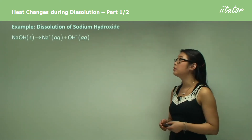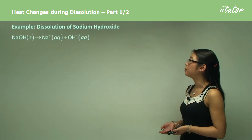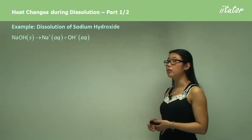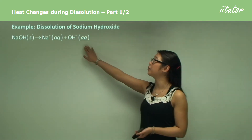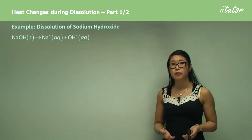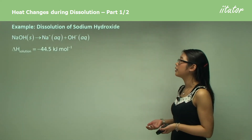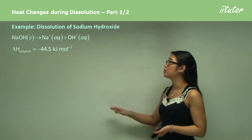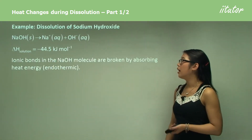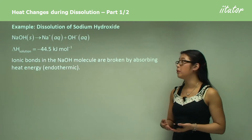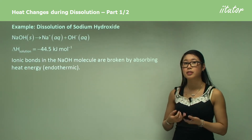As an example, the dissolution of sodium hydroxide (NaOH): solid NaOH is put into water and becomes an aqueous solution of positive sodium ions and negative hydroxide ions. In this case it's an exothermic reaction because we have a negative delta H. The ionic bonds in the NaOH molecule are broken by absorbing heat energy, so that step is endothermic.